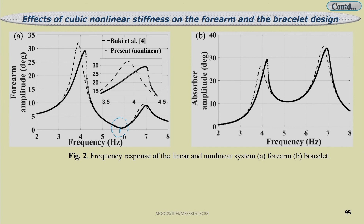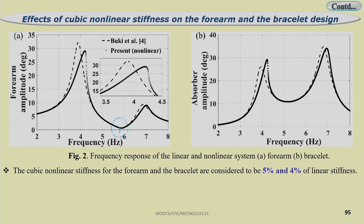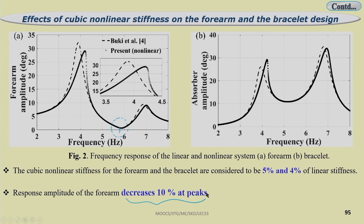The arm vibration is reduced in this region. The system must operate in a frequency range where the absorber amplitude shows minimum response. The observer amplitude near the two peak regions is around 30 degrees, but near the natural frequency it is around 10 degrees. The cubic non-linear stiffness of the forearm and bracelet are considered as 5 and 4 percent of linear stiffness. The response amplitude of the forearm decreases by 10 percent at the peak compared to the result of Buki et al.